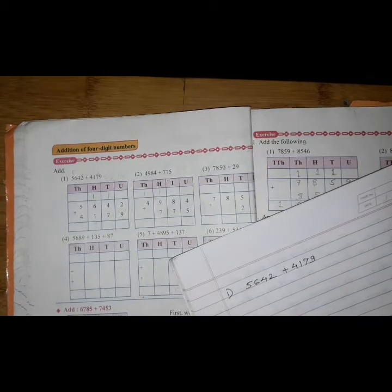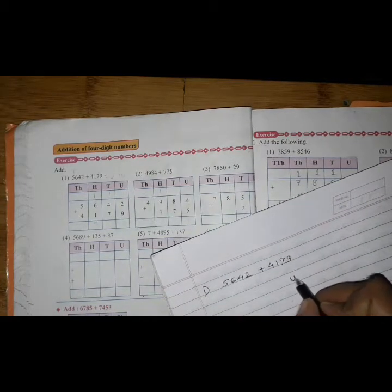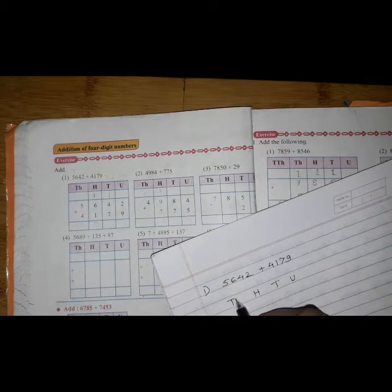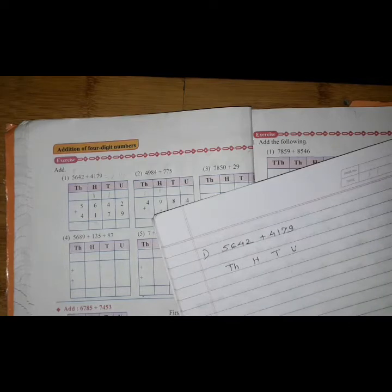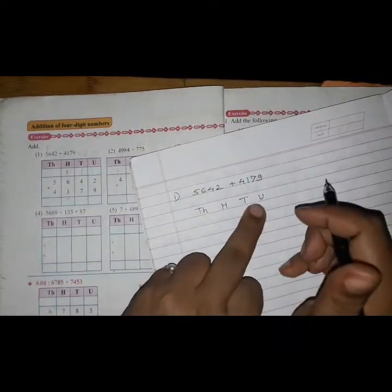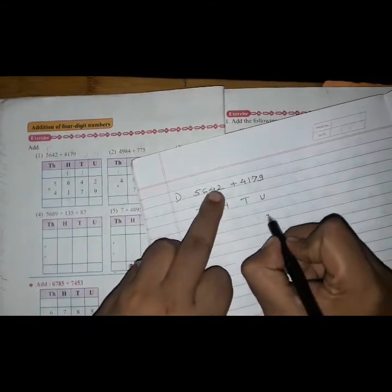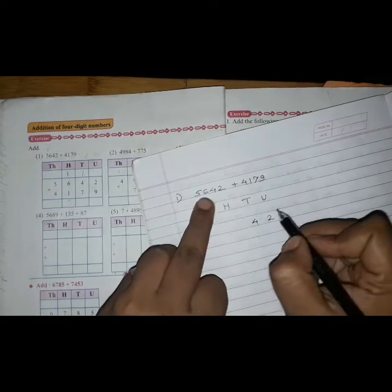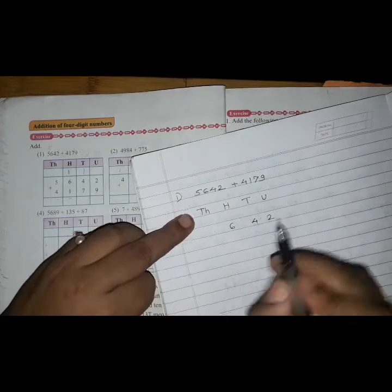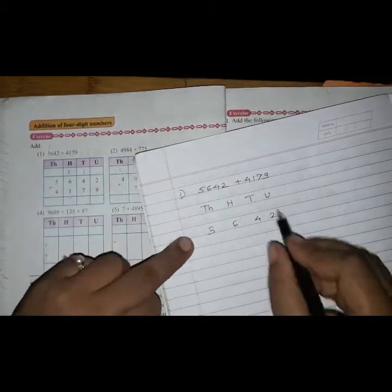First, units, tens, hundreds, and thousands. You have to take care to write units under units. Here 2 is units, 4 is tens, 6 is hundreds, and 5 is thousands. Same in this number also, write units under units: 9, 7 is tens, 1 is hundreds.